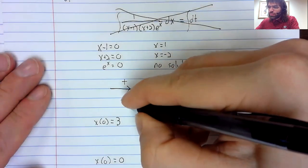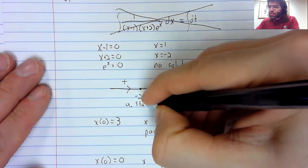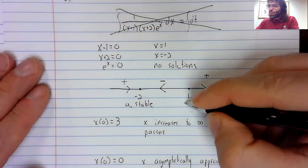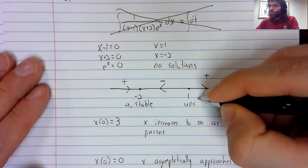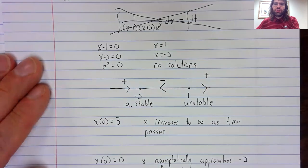Negative two is asymptotically stable. Positive one is unstable.